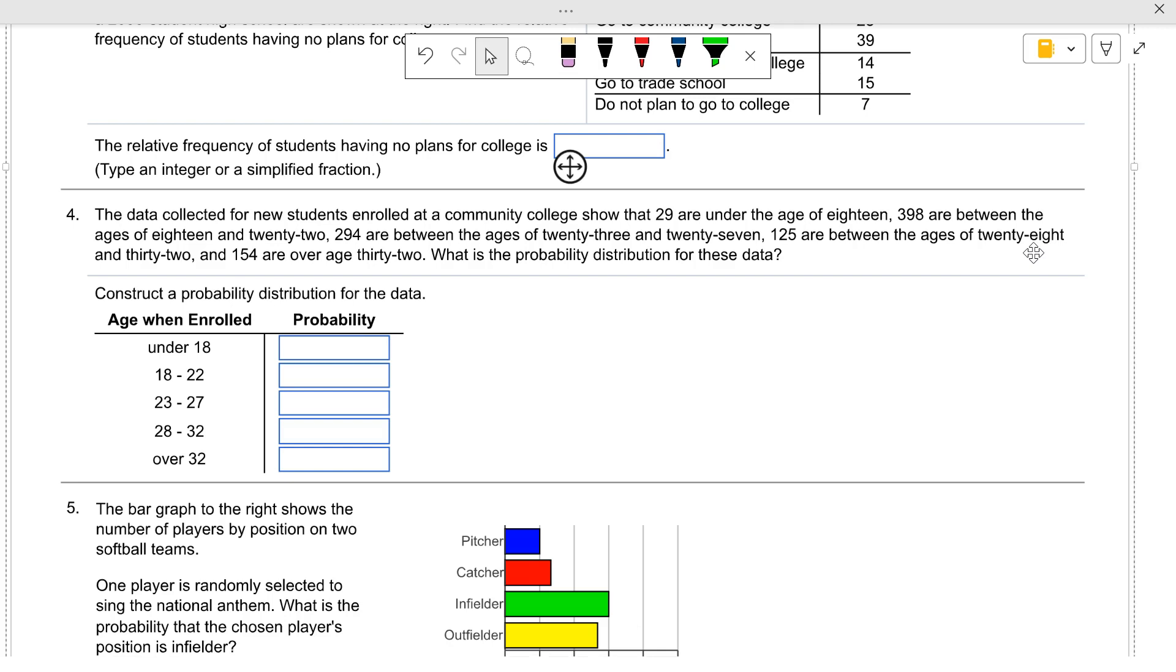Okay, the data collected for new students show that 29 are under the age of 18, so there's a 29 that goes here. 398 are between 18 and 20, 294 are between 23 and 27, 125 are between 28 and 32, and 154 are over 32. So we have to add all those up. What do all those add up to? One thousand. So the probability of the first one is 29 out of one thousand. The probability of the second one is, I don't know, type 398 over a thousand as a fraction and reduce it. What do we get?